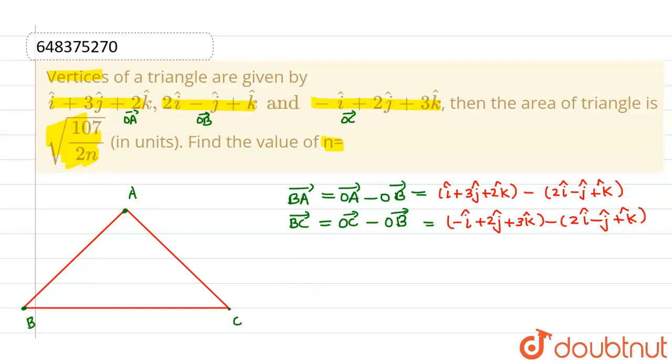Now if you perform the simplifications, then you will be getting BA vector as the first side equals to i minus 2i is minus i, 3j minus minus of j is 4j, and last 2k minus k is k.